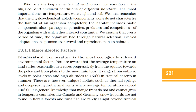What are the key elements that lead to so much variation in the physical and chemical conditions of different habitats? The most important ones are temperature, water, light, and soil. We must remember that the physiochemical abiotic components alone do not characterize the habitat of an organism completely. The habitat includes biotic components also: pathogens, parasites, predators, and competitors. We assume that over time, the organism has through natural selection evolved adaptations to optimize its survival and reproduction in its habitat. Each organism has an invariably defined range of conditions it can tolerate, the resources it utilizes, and a distinct functional role in the ecological system — all these together comprise its niche.